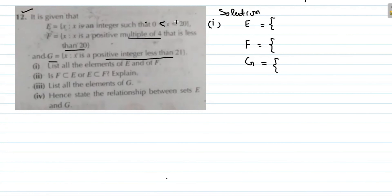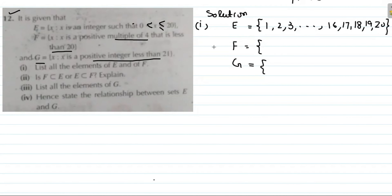For E: x is greater than 0 and less than or equal to 20, so E = {1, 2, 3, ..., 18, 19, 20}. For F: multiples of 4 less than 20 are 4, 8, 12, 16 — since 20 is not less than 20, it is excluded. For G: positive integers less than 21, so G = {1, 2, 3, ..., 19, 20}.